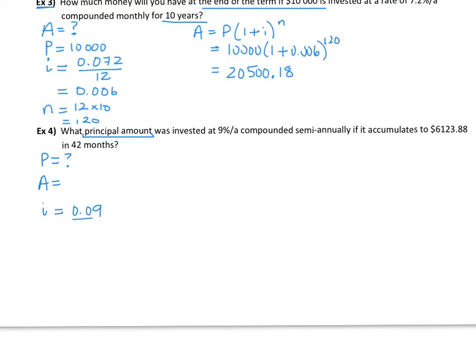Compounded semi-annually. So I got to divide that into two equal pieces. So that's going to equal 0.045. It accumulates to $6,123.88, and in 42 months.